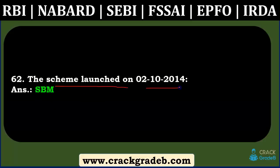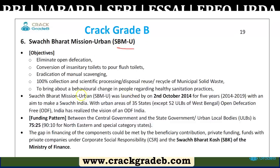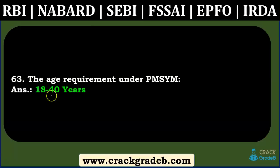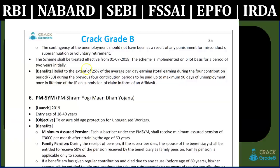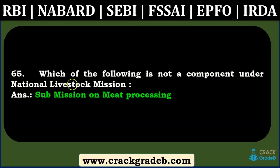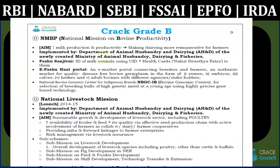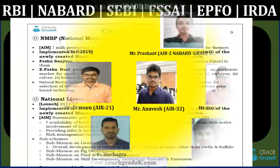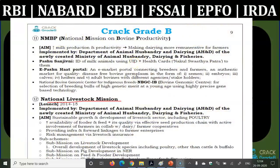Shift to low mortality and low fertility — demographic transition — was not covered. Scheme launched on 2nd October 2014 — Swachh Bharat Mission — covered in the schemes chapter under Ministry of Urban Poverty Alleviation. Age requirement under PM Shram Yogi Maandhan — 18 to 40 years — covered in the scheme document. Community forestry — involvement of local communities in forest production and management — was a straightforward question, not covered specifically. National Seed Mission components — covered in Agriculture and Animal Husbandry, Dairying and Fisheries schemes.